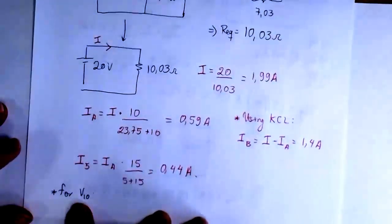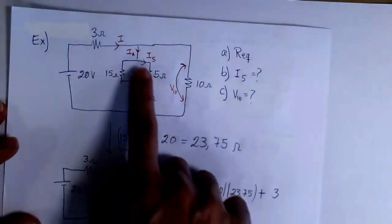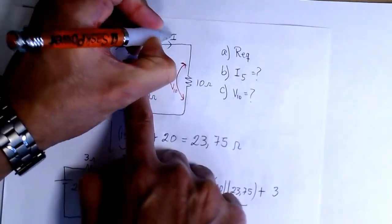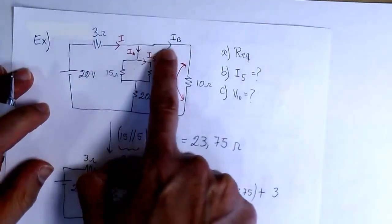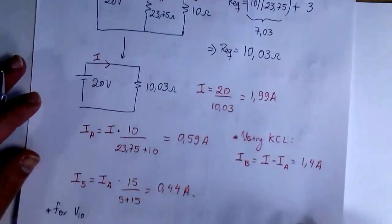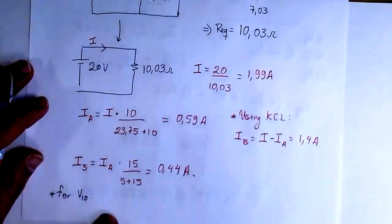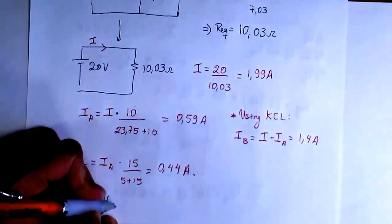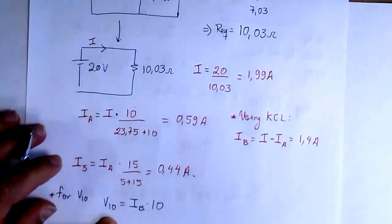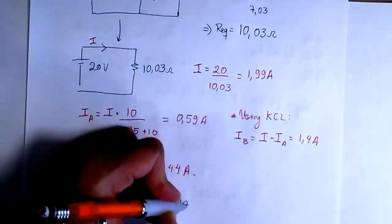For V10, that's the voltage across the 10 ohm resistor, and we can easily find it since we already know IB — the current flowing through the 10 ohm resistor. We multiply IB times 10 and we get 14 volts.